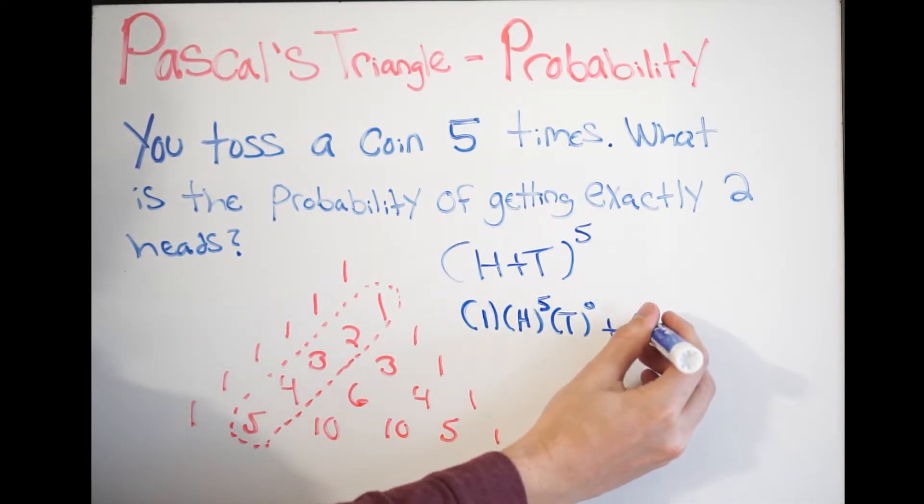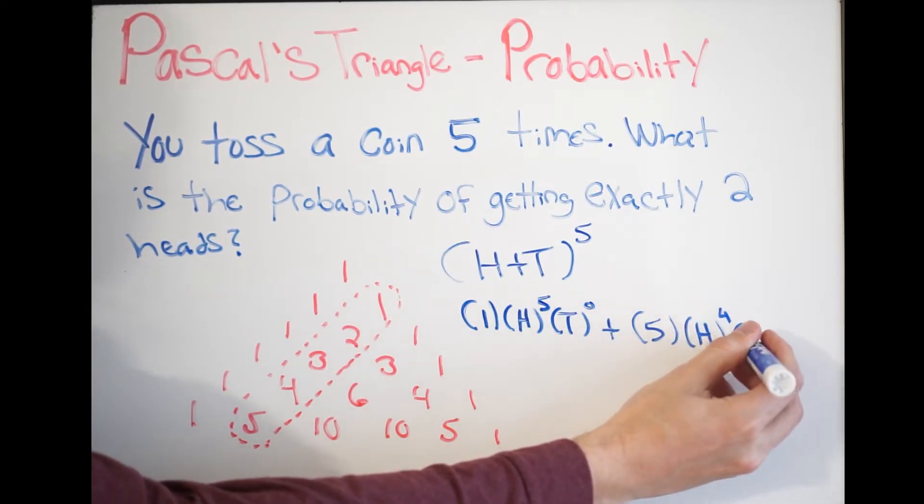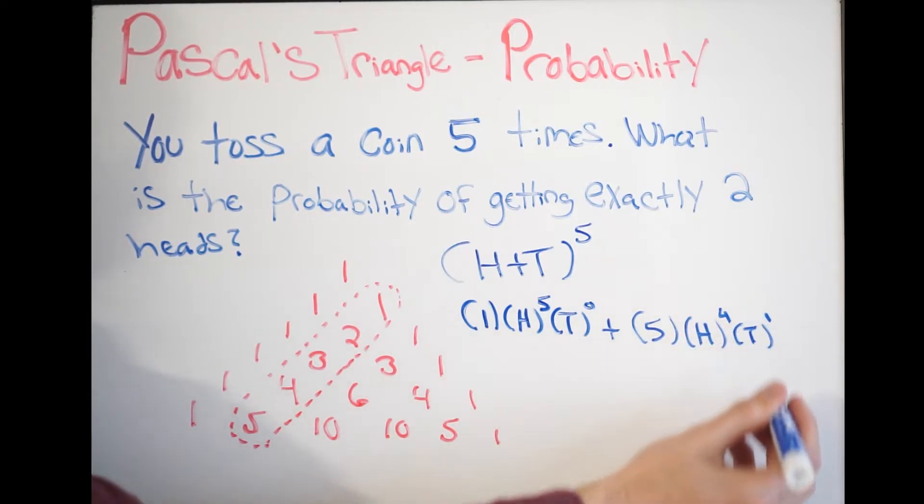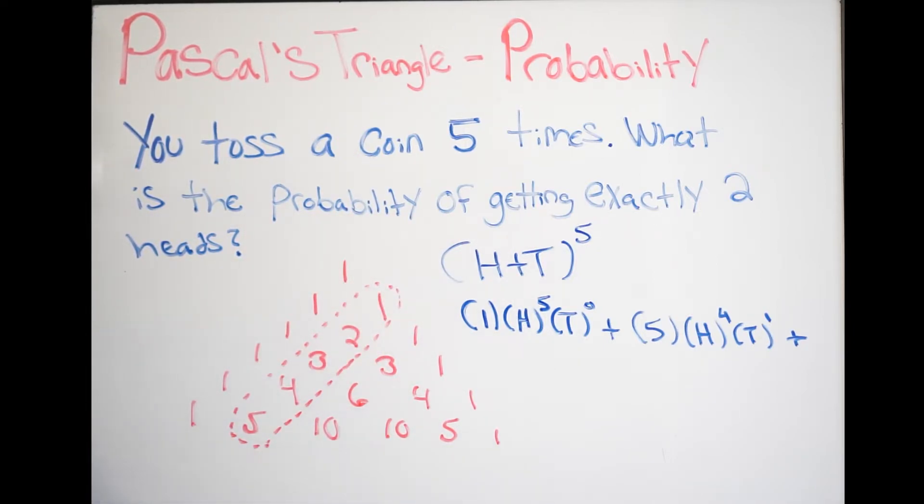We get plus, and then five, and we get H to the fourth, T to the first, plus. Again, we're just expanding out this binomial. You should have knowledge how to do that if you're on this video.